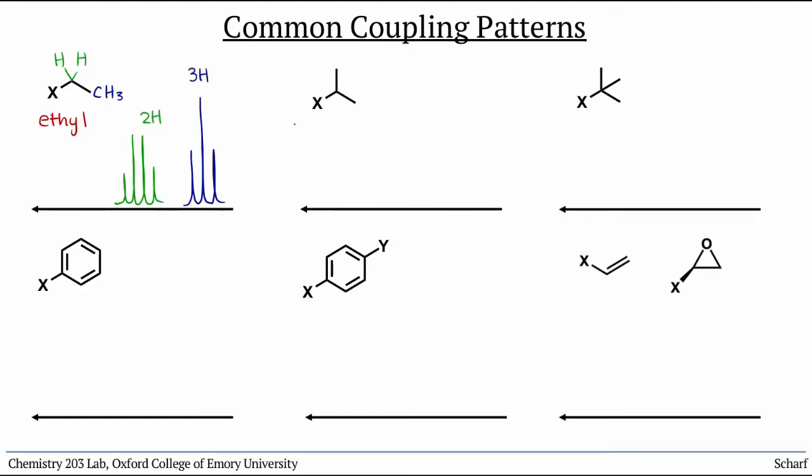An isopropyl group shows an upfield doublet for the 6 equivalent CH3 hydrogens, and a downfield septet for the single hydrogen in the middle.